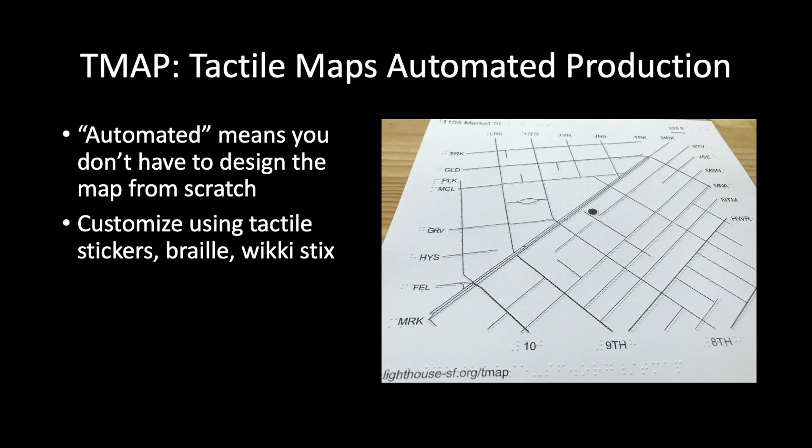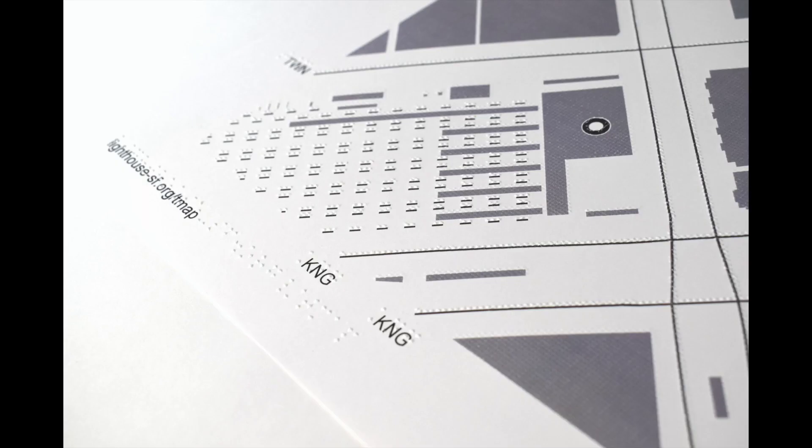With TMAP, you don't have to design and label a map yourself. However, the tactile maps can benefit from customization, whether it's sticking on a bump dot for your favorite coffee shop, extra braille labels, or adding a route with wiki sticks. TMAP tactile maps can range from a few blocks to a few miles wide.